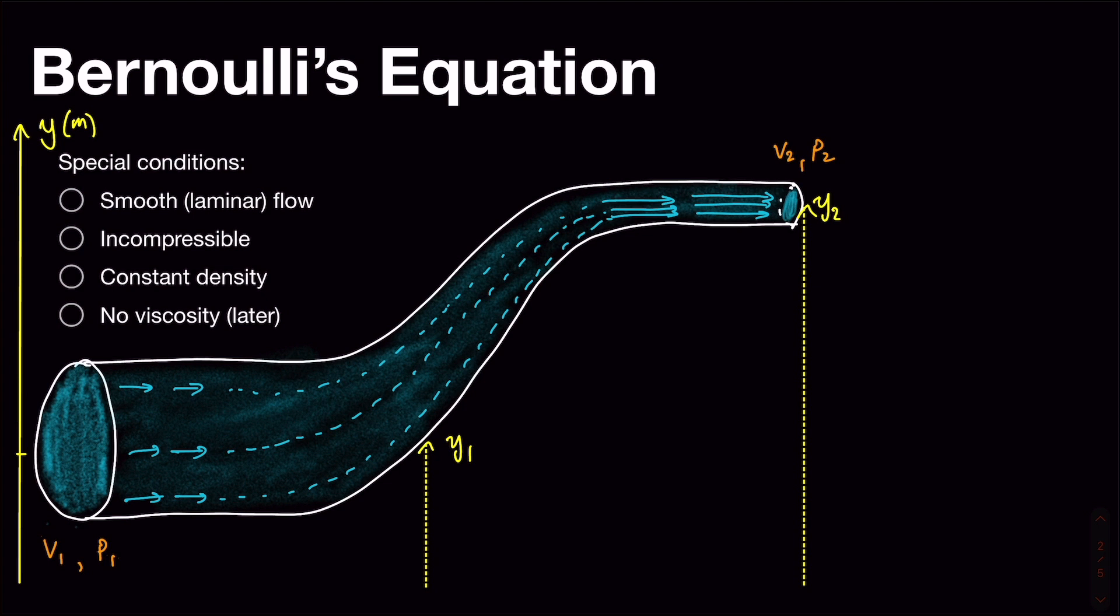So a couple of other important features that we're going to imagine apply to this situation before we start talking about it. We're going to imagine that we have a nice smooth flow with no sort of bubbles or turbulence or anything weird happening. And the technical name for that is laminar flow.